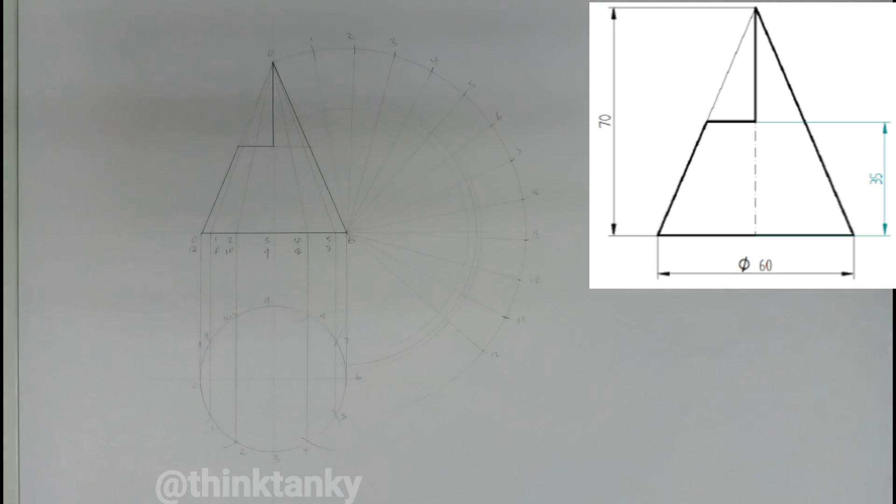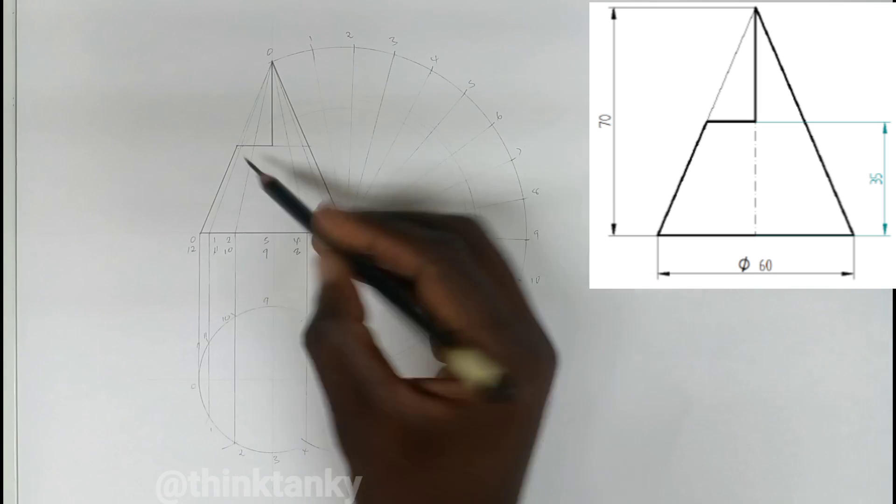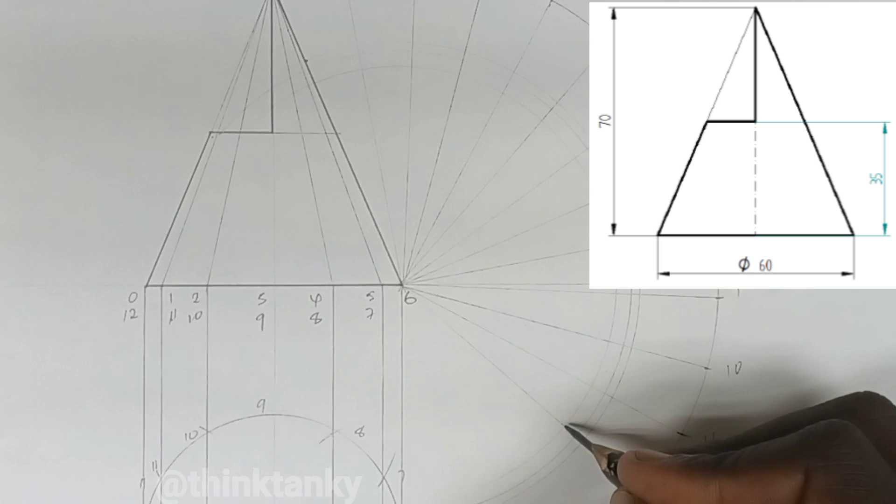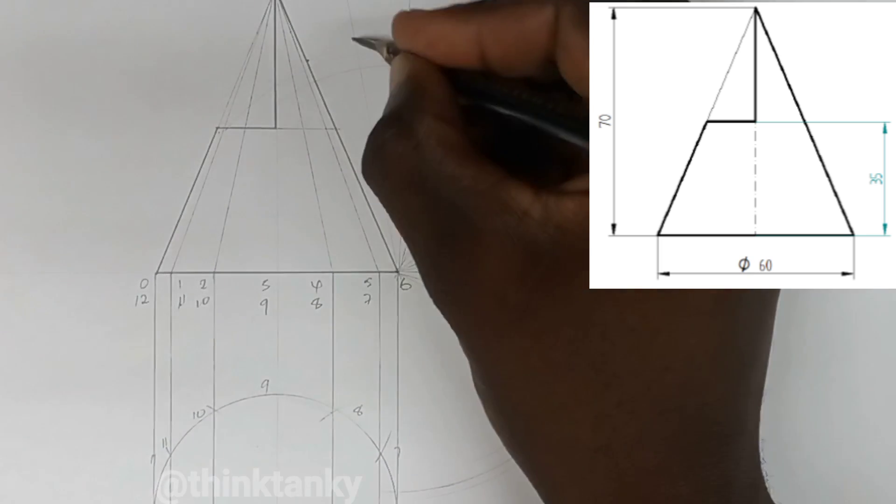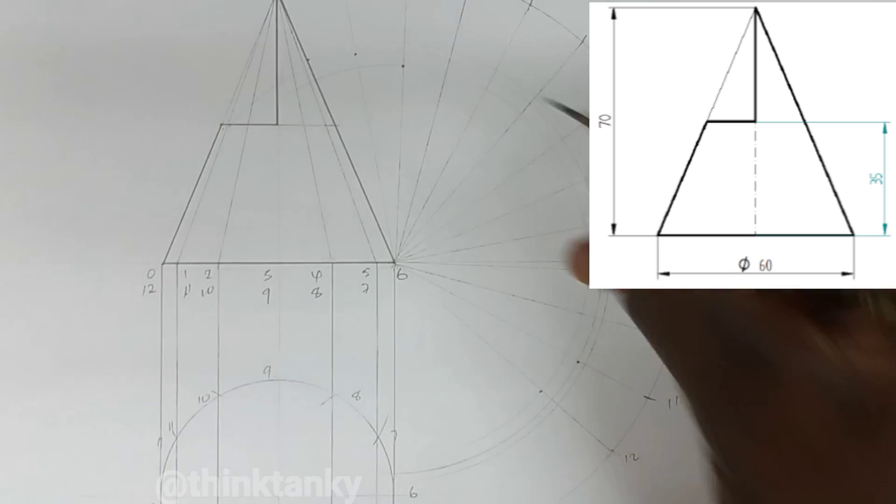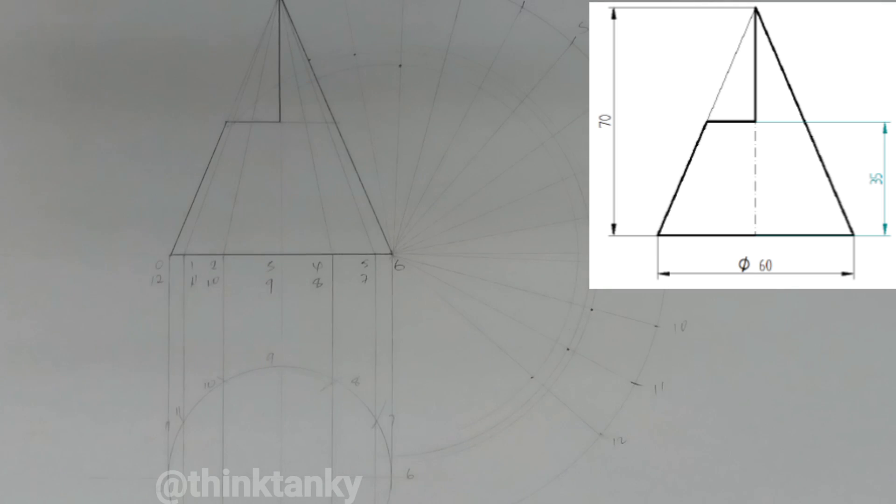So now I'm going to track. This is the curve of 0-12, so it's here. This is the curve of 1-11, and this is the curve of 2-10.